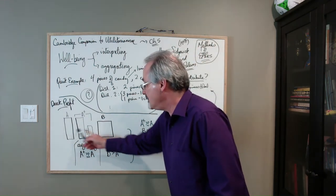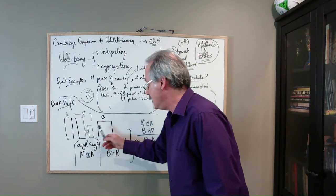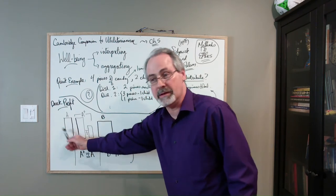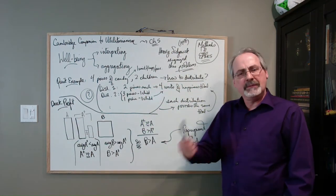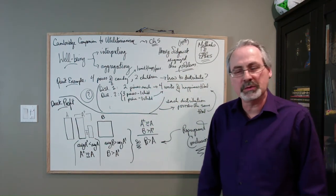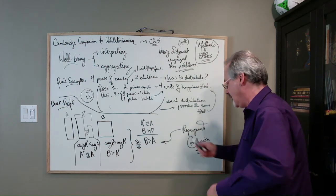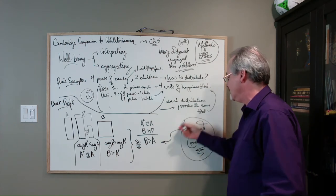So if this one is better than this one and this one is better than that one, then that one is better than that one. Now, Parfit says, if this reasoning all goes through, you're landing in what he calls the repugnant conclusion, right? Again,